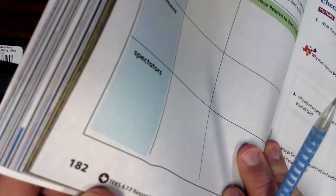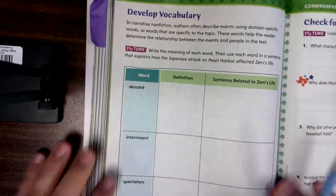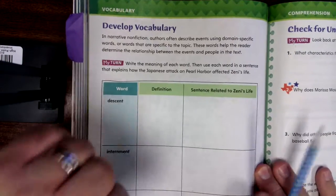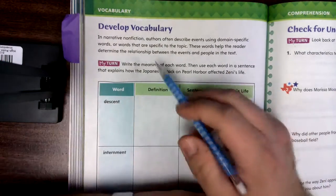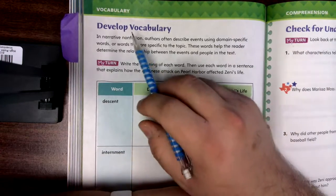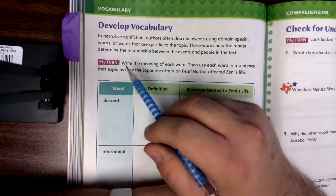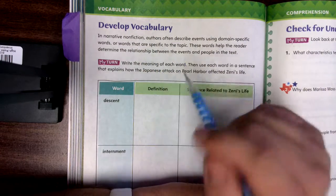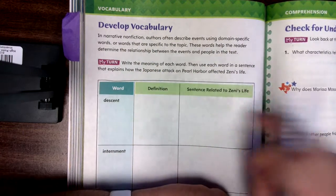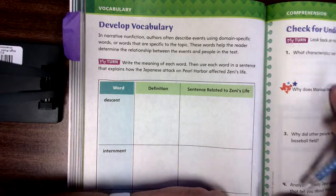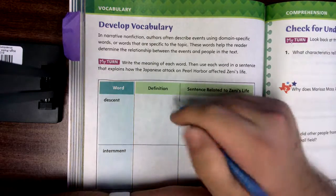When you're done, you will come to page 182 and go to Develop Vocabulary. This isn't the only page we're doing — we're doing two pages and they are connected; they go together.